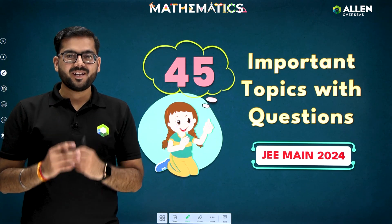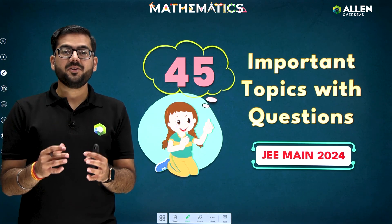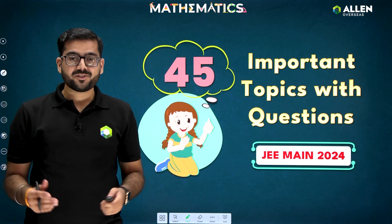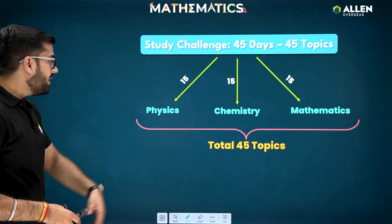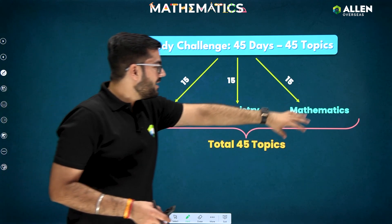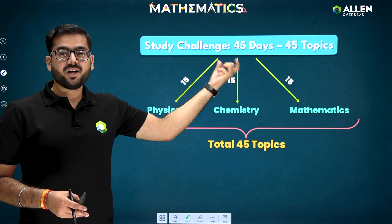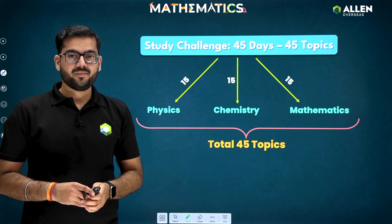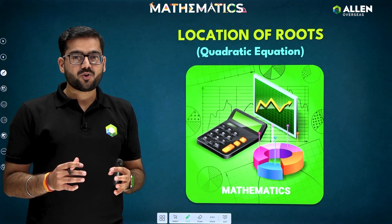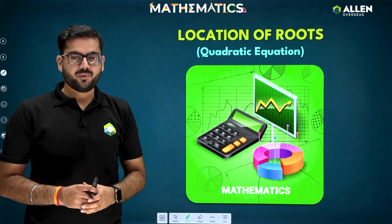Hello everyone, welcome to Ellen Overseas. It's a very special day to start this series. In this series we will cover 45 important topics in 45 days — 15 physics, 15 chemistry, and 15 maths. I am going to cover the maths section. This is the study challenge we will cover, so without wasting too much time, let's start our series with the first topic: Location of Roots, under the chapter Quadratic Equations.